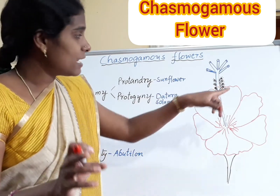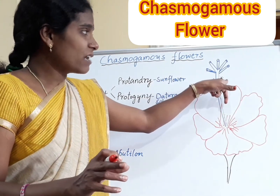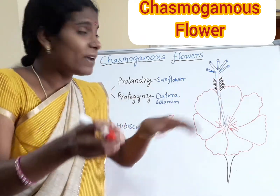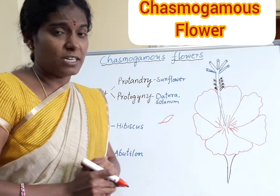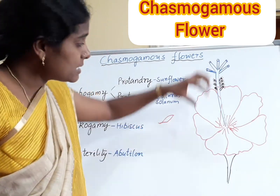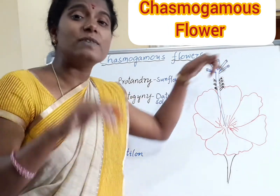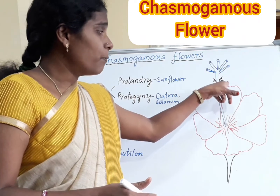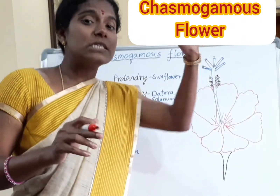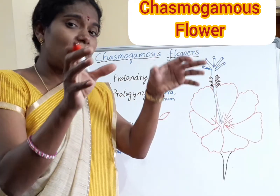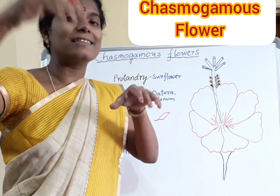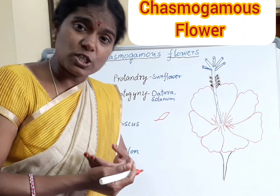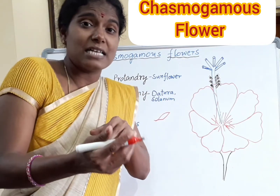In chasmogamous flowers we can observe pollen grains and stigma. Pollination is the reaching of pollen grains to the stigma. In self-pollination, pollen grains reach the stigma of the same flower. In cross-pollination, pollen grains of one flower reach the stigma of another flower — either on the same plant or on a different plant.